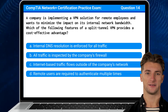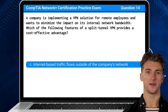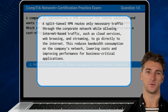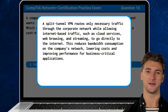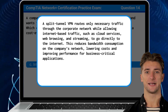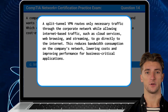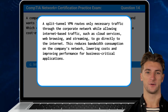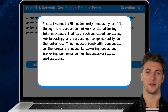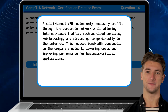The answer is C — Internet-based traffic flows outside of the company's network. A split-tunnel VPN routes only necessary traffic through the corporate network while allowing internet-based traffic, such as cloud services, web browsing, and streaming, to go directly to the internet. This reduces bandwidth consumption on the company's network, lowering costs and improving performance for business-critical applications.